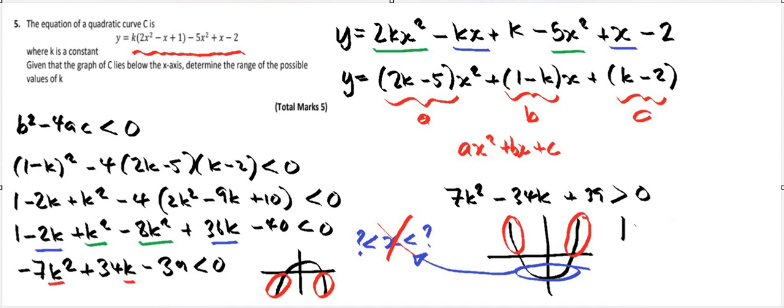We get k has to be less than 13 over 7, or k is greater than 3, because those are our two roots. Okay, k equals 3 is this root, and k equals 13 over 7 is that. Okay, that's how it works. Don't get confused about where the solutions are. You don't always have to sandwich the value you're looking for between two limits.